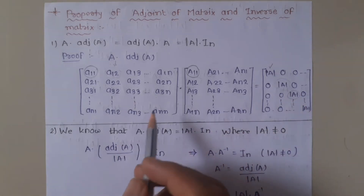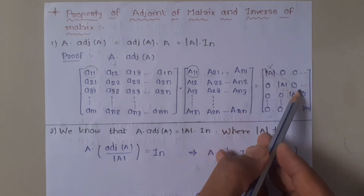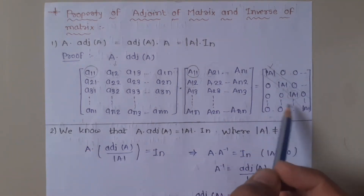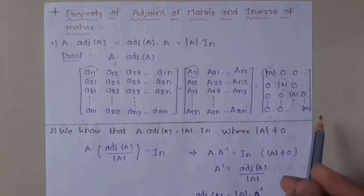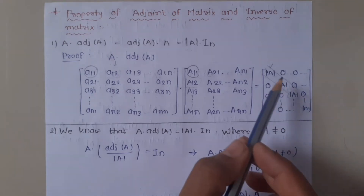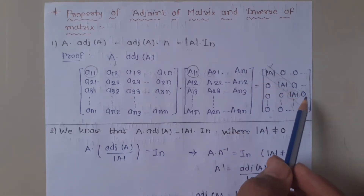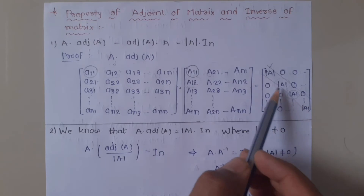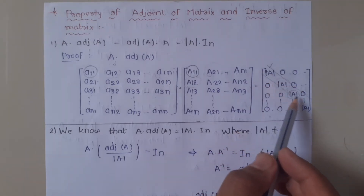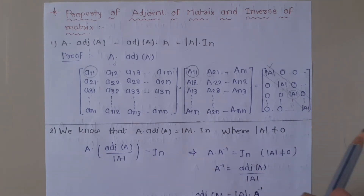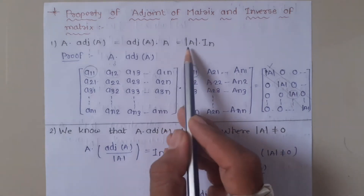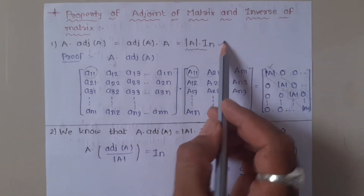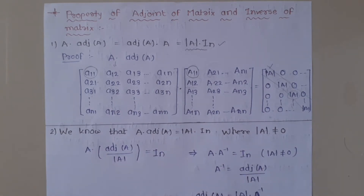So if you continue this n times, what you get is a matrix where only the principal diagonal has values — all equal to the value of the determinant. This means we can take determinant of A as common, leaving 1s on the diagonal inside, which is the nth order unit matrix. Therefore, the result is: Determinant of A into Unit Matrix of nth order. This property is very, very important and I've explained its proof. Now let's move to Property number 2.